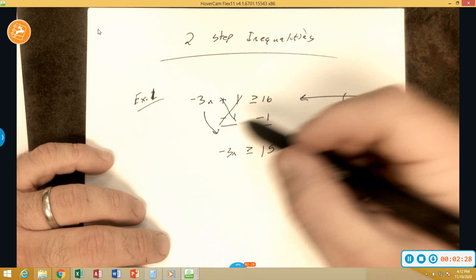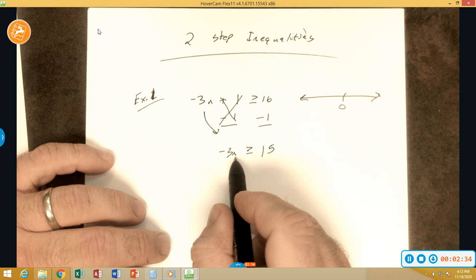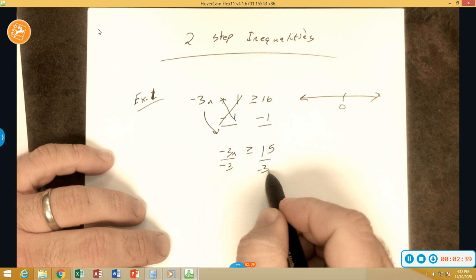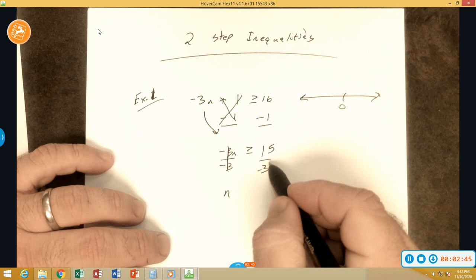So here we are, we got negative 3 and it's multiplying n. So to undo that, we're going to divide. What we do on the left, we do on the right. Negative 3 divided by negative 3 is a big old 1, leaving us with an n. 15 divided by negative 3 is negative 5.